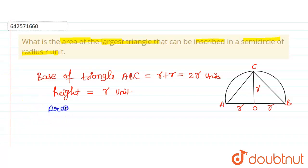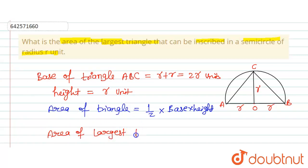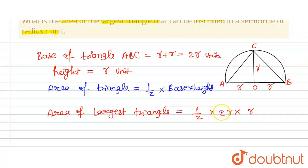As we know, the area of a triangle is calculated by ½ × base × height. So the area of the largest triangle equals ½ × 2r × r. The 2 cancels out, giving us r² square units.